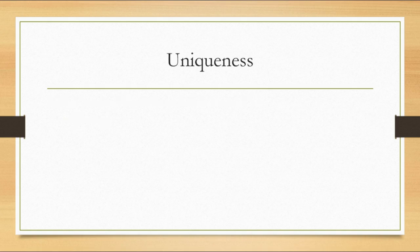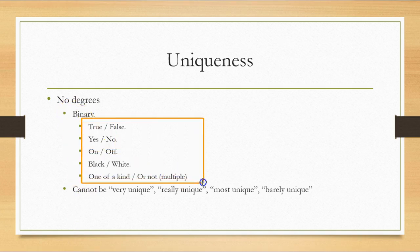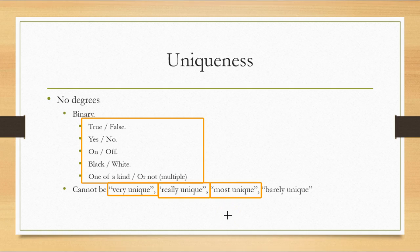Let's talk about uniqueness. Uniqueness means only one thing — it means it is one of a kind. Therefore, there are no degrees of uniqueness. It's binary: it's true or false, it's yes or no, it's on or off, it's black or white — it's one of a kind, or not. You cannot have something that is 'very unique' — one is either unique or it's not, so it can't be 'very unique,' 'really unique,' or 'the most unique thing you've ever seen.' That terminology doesn't work in real life, and it doesn't work in database life either.